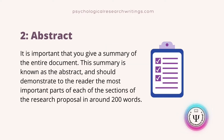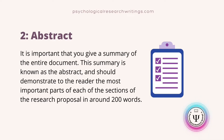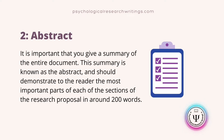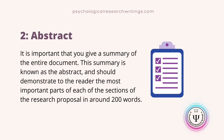The next section is the abstract. Your research proposal in its entirety may be anywhere around 5,000 to 8,000 words in length, so it is important that you give a summary of the entire document. This summary is known as the abstract and should demonstrate to the reader the most important parts of each section of the research proposal in around 200 words. It is often useful to write the abstract last, after the rest of the research proposal has been written and fully thought out.